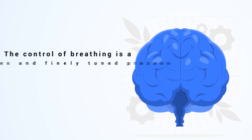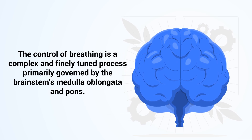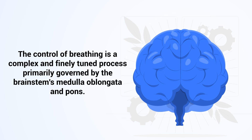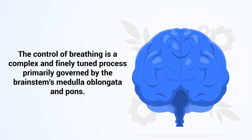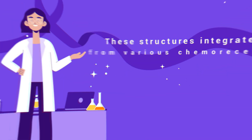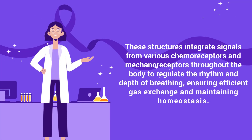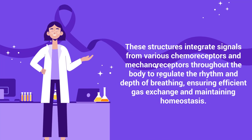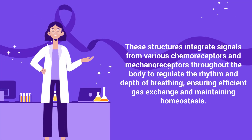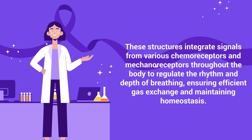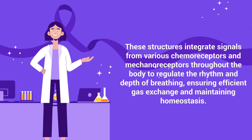The control of breathing is a complex and finely tuned process, primarily governed by the brainstem's medulla oblongata and pons. These structures integrate signals from various chemoreceptors and mechanoreceptors throughout the body to regulate the rhythm and depth of breathing, ensuring efficient gas exchange and maintaining homeostasis.